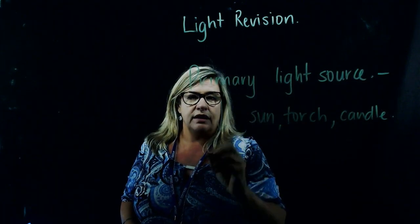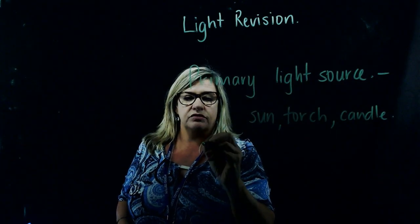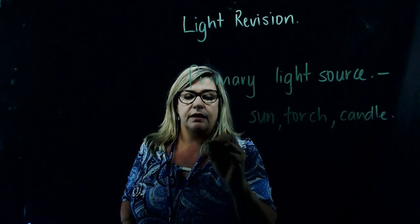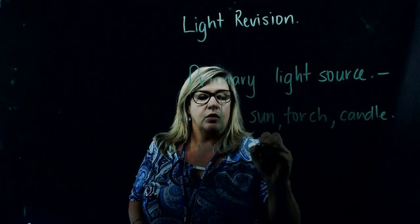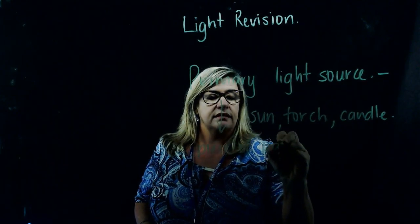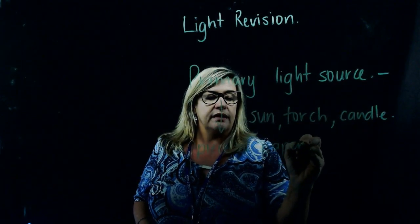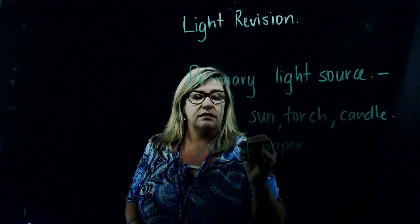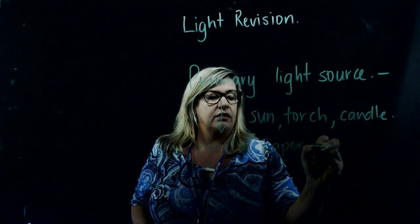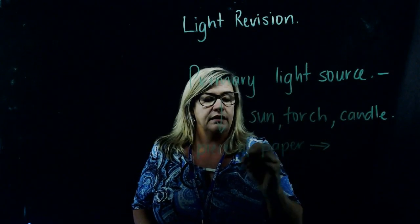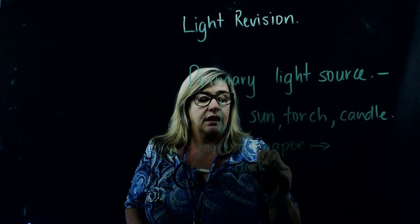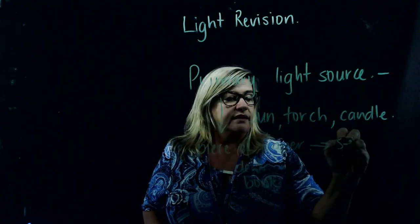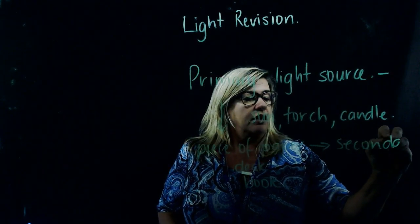Once a primary light source bounces onto another object like a piece of paper or a desk, that's when the light is reflected off the secondary light source and into our eyes. So a piece of paper, a desk, a book are all secondary light sources.